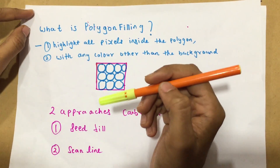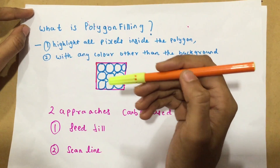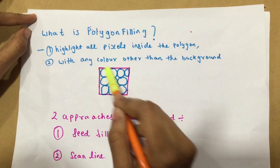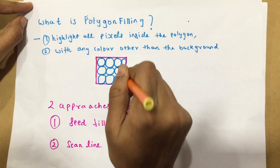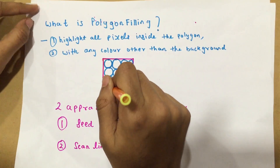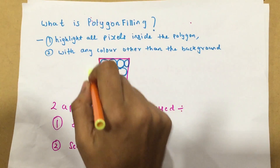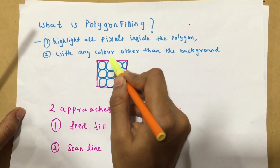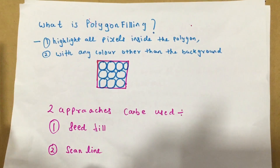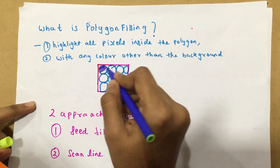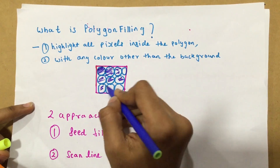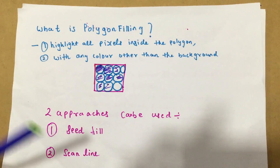Polygon Filling is something that highlights all the pixels inside my polygon. So I have this polygon, and it's going to highlight all of the pixels inside my polygon with any color other than the background color. Let's say if I have this polygon and my background color is white, I have to color it with anything other than white — blue, purple, orange, or anything but white. So this was pretty basic.